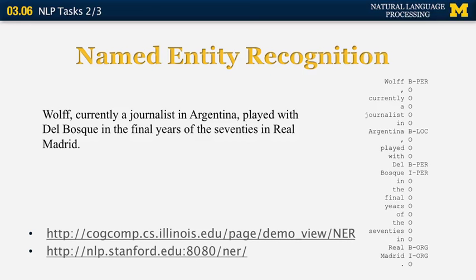Argentina is labeled as a location — a single word. Del Bosque is labeled as a person, with B-PER for the first word (beginning of person) and I-PER (inside a person) for the second. Since the next label is O, no further words are part of this entity. Real Madrid is an organization: the first word is labeled beginning of organization, the second is inside organization. If you're interested, this topic will be covered in more detail later in the course, and there are online demos of NER systems at the URLs shown.